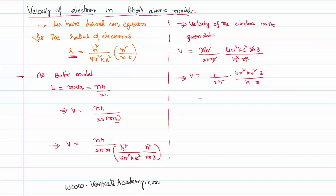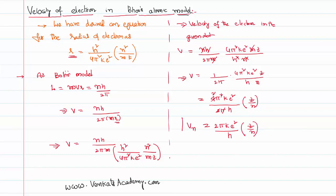So the remaining terms: 4π² is a constant, k is a constant, e is constant (we are talking about the electron), 2π is a constant, and h is also constant. Cancelling one π and one 2, what remains is v = 2πke²/h × (z/n). This is the velocity of the electron in the nth orbit.